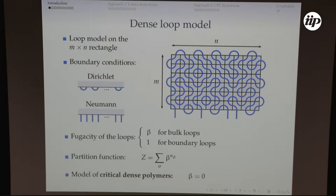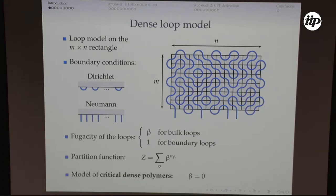On a given configuration, you have two types of loops. One type are closed loops — I'm going to call those bulk loops, and these have weight beta. The second type I call boundary loops. These are not really closed loops; they start from a defect and end at another defect. In general, I could give these a different weight gamma, which I'm going to fix to one. For the model of critical dense polymers, beta is set to zero, meaning every configuration has no bulk loops — only boundary loops.